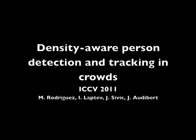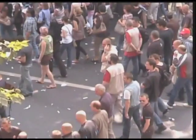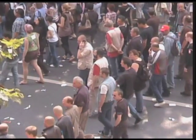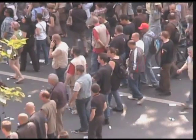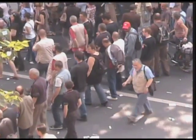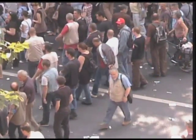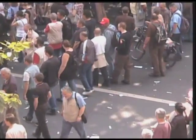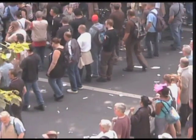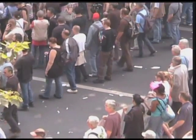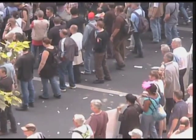In this work, we address the problem of person detection and tracking in crowded video scenes. Although the detection of individual objects has been improved significantly over the years, crowd scenes such as these remain particularly challenging for the detection and tracking tasks due to heavy occlusions, high person densities, and significant variation in people's appearance.